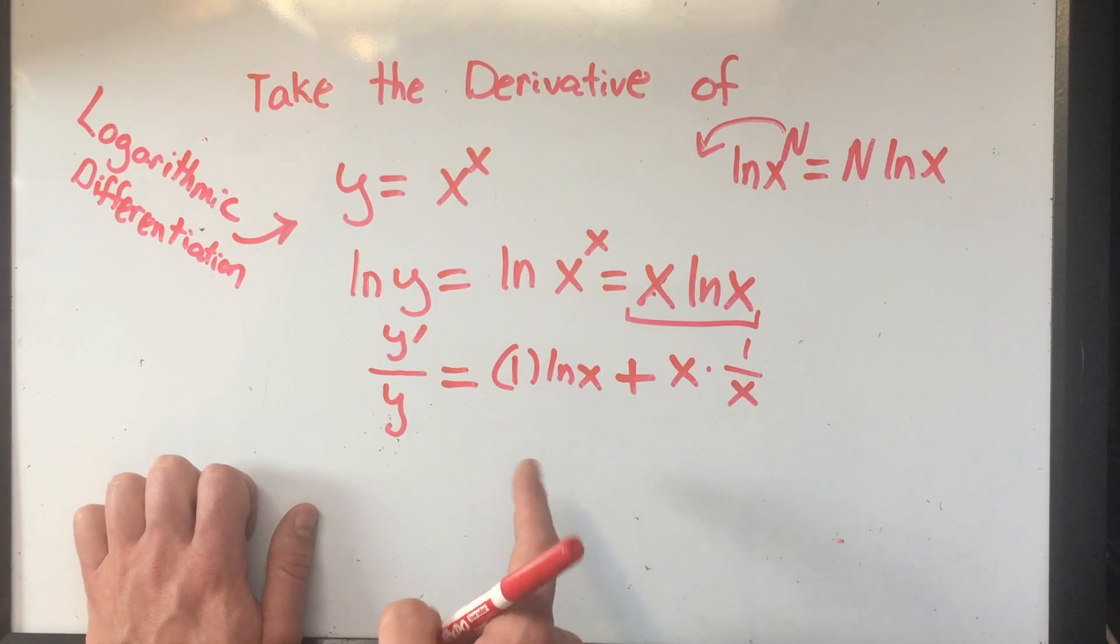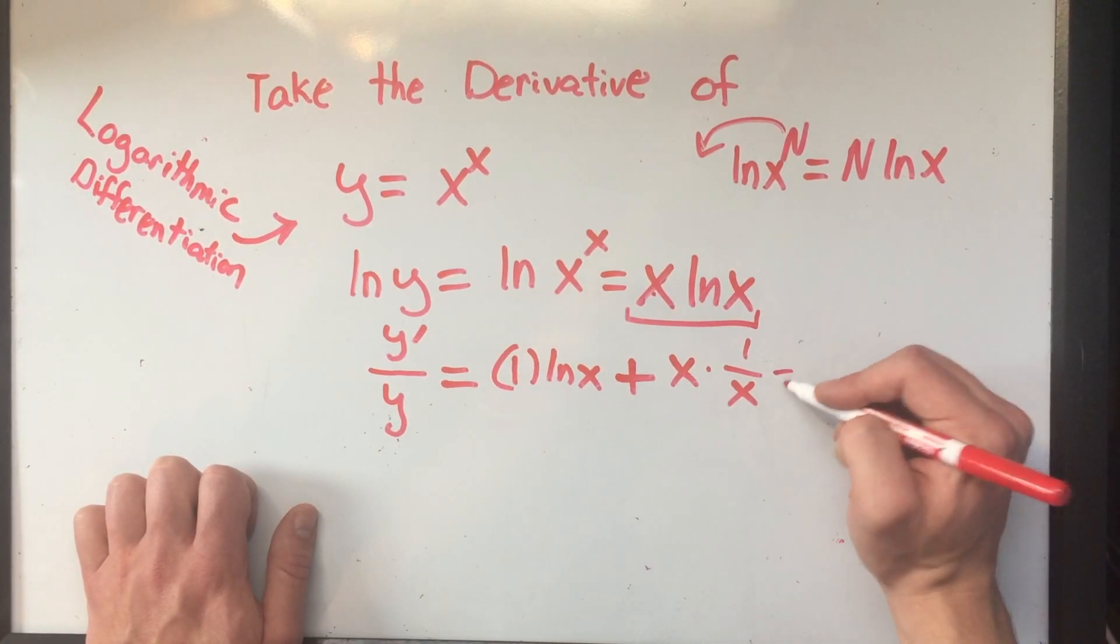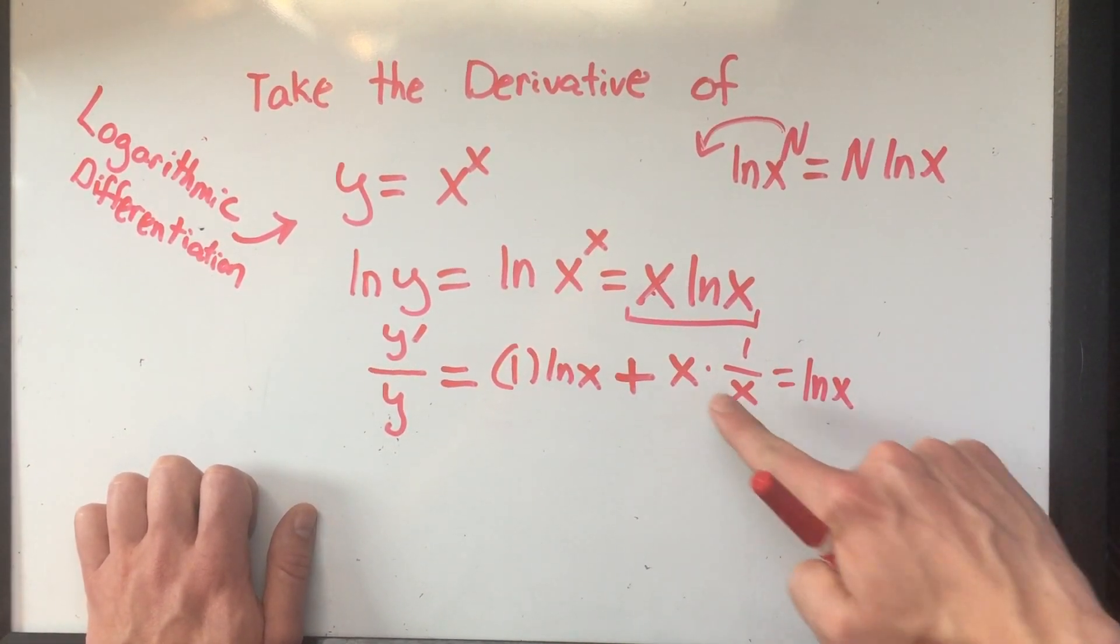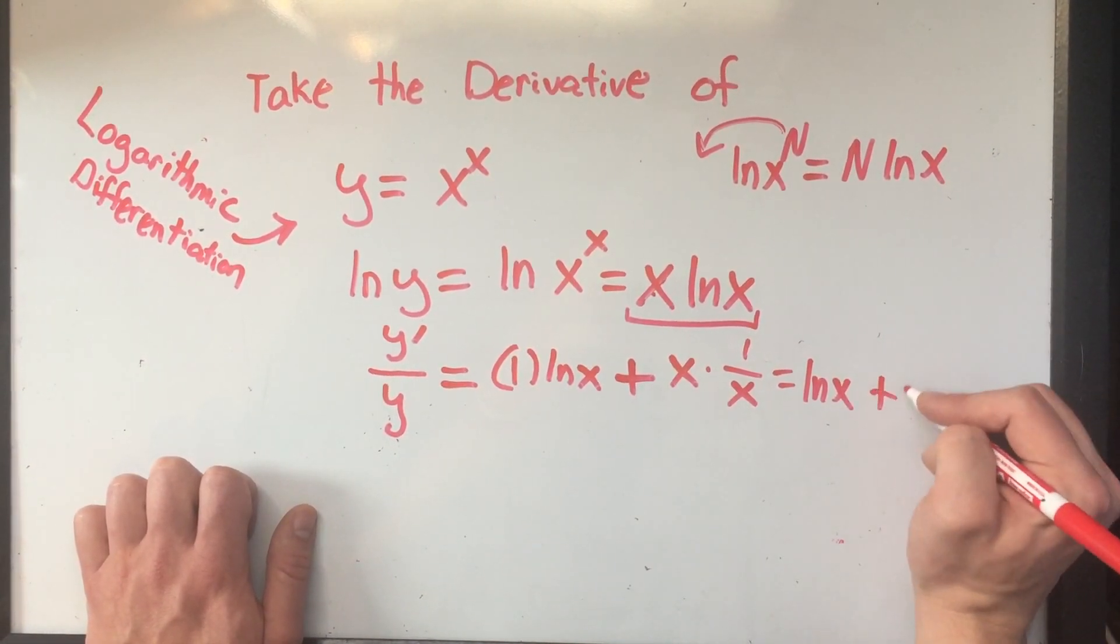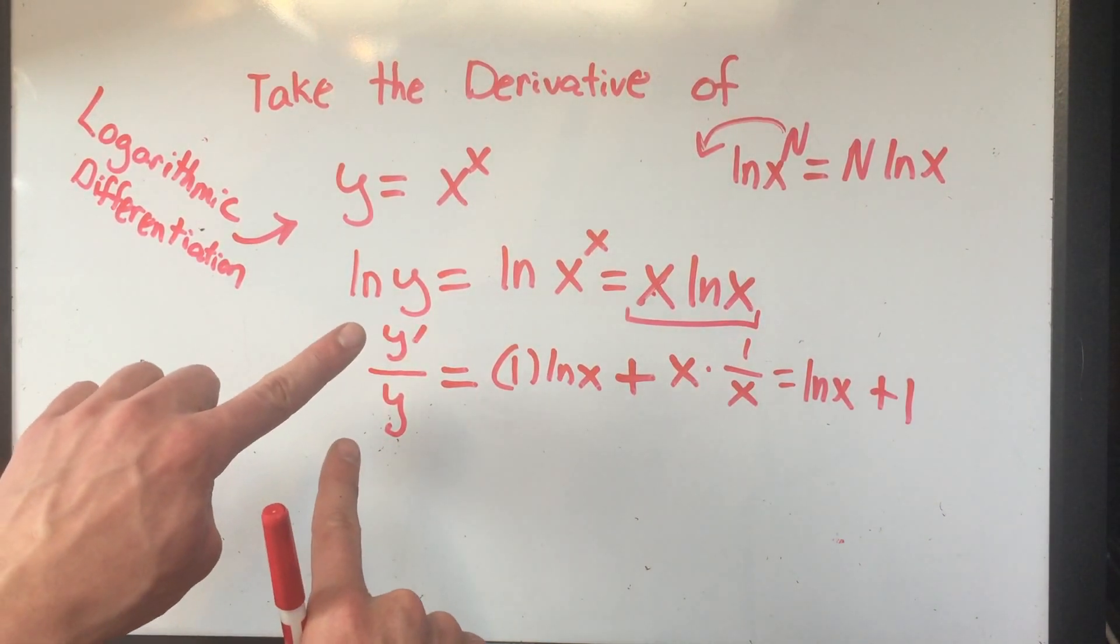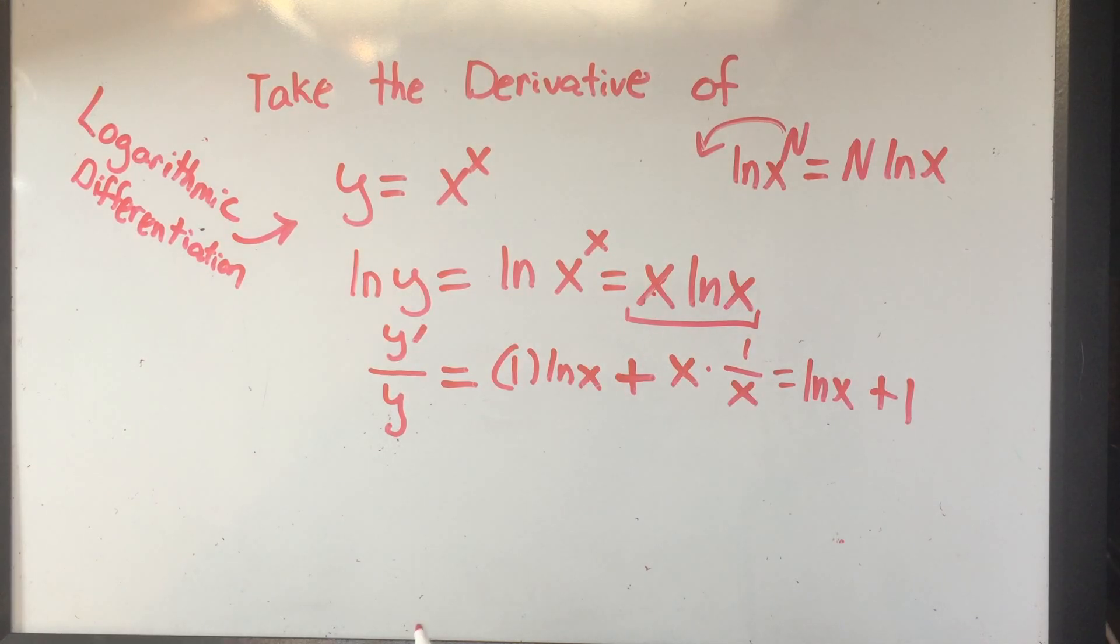So I can clean this up a little bit. 1 times ln of x, I might as well just write that as ln of x. And here, x over x, that's just 1, right? So now I've got y prime over y equals ln of x plus 1.